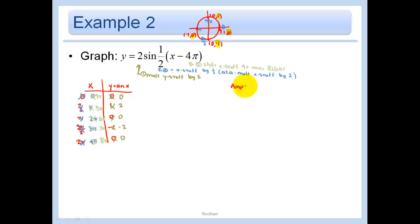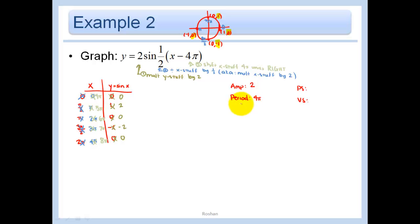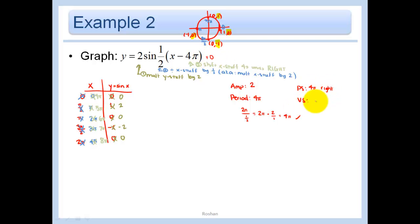Before I graph it, let me get the amplitude, period, phase shift, and vertical shift out of the way. The amplitude is simply 2. The period — we went from 4π to 8π, but don't get confused: our period is not 8π, because we shifted over. We started at 4π to get to 8π, so that took us 4π. Quick check: 2π over b, and our b is 1/2, so 2π ÷ (1/2) = 4π. Yep, we did that right. The phase shift is 4π right. We didn't do anything to the vertical, so we have none.